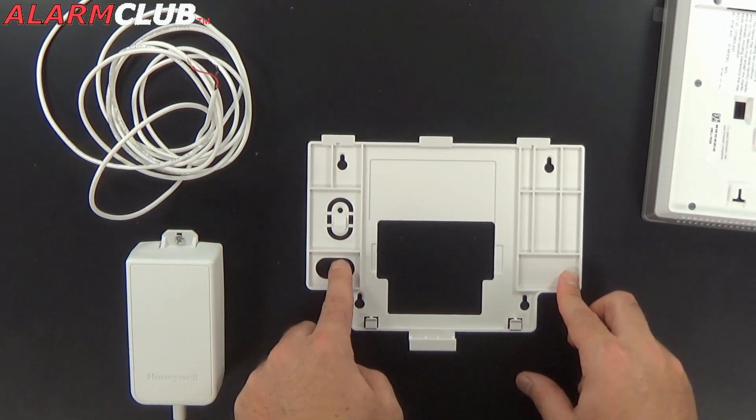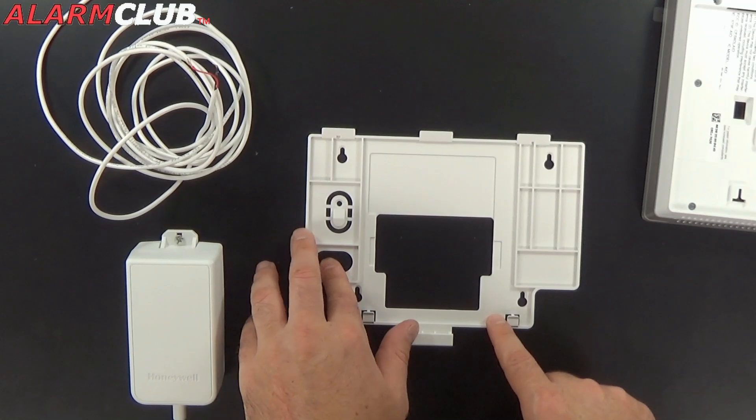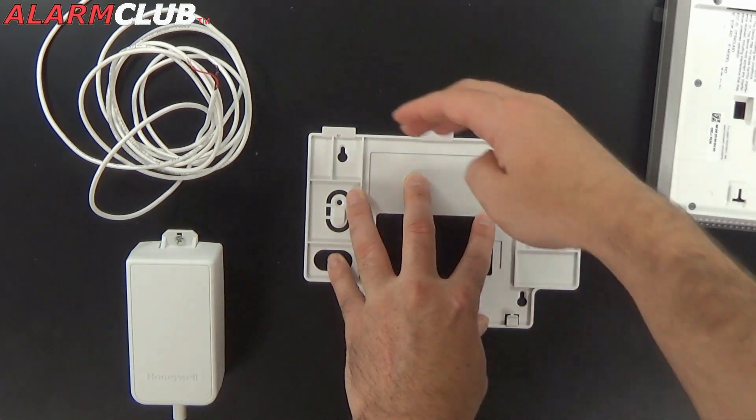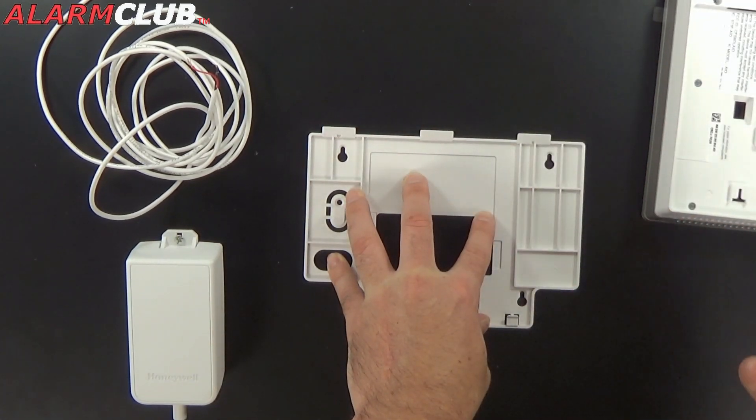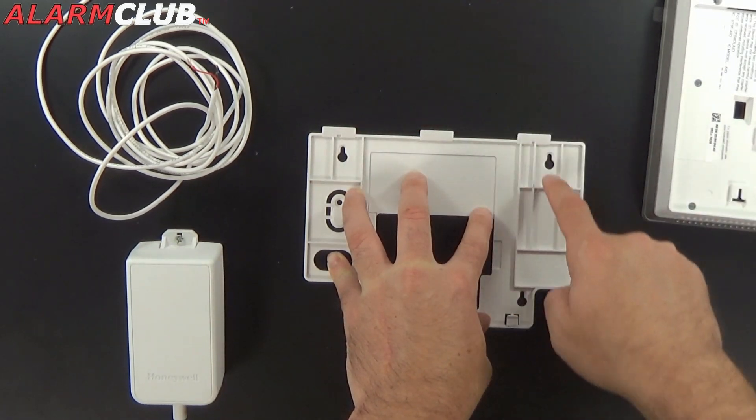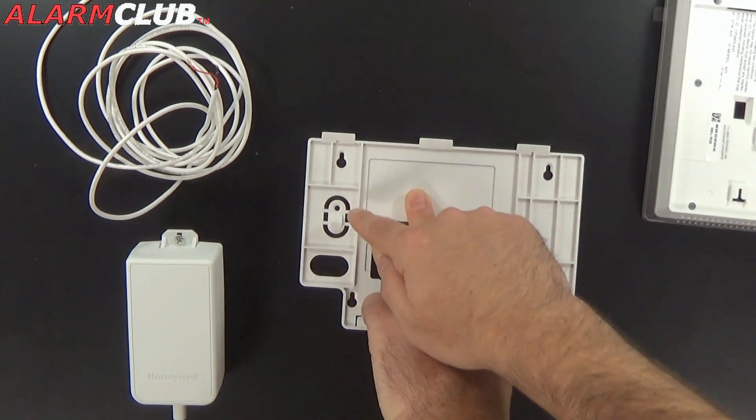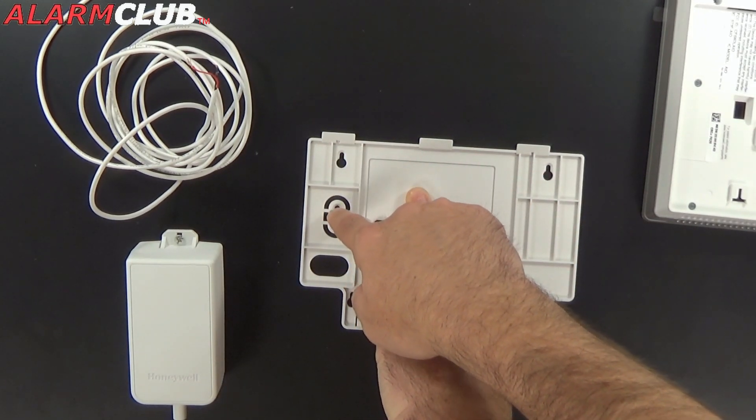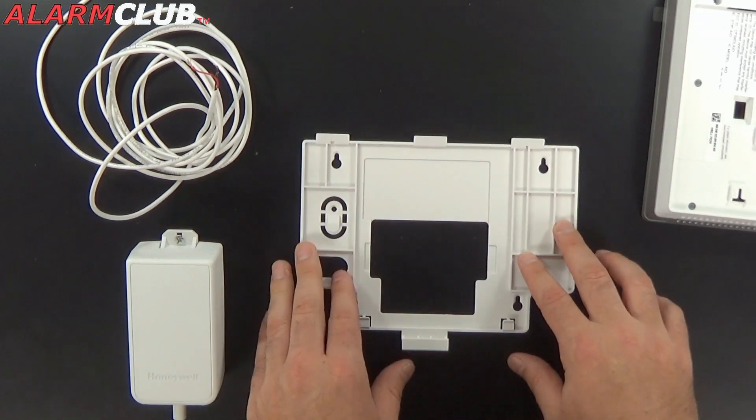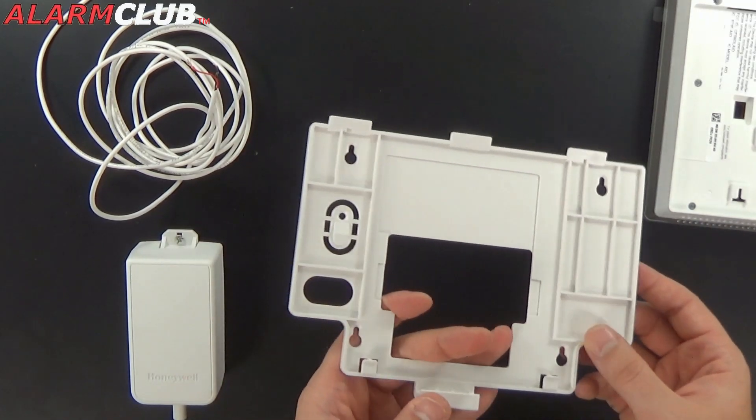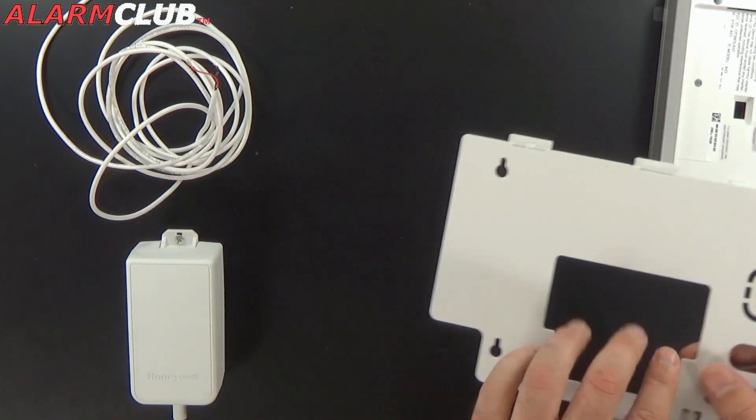So once you have your hole drilled and you have your wires running through, then you want to go ahead and just make sure this is leveled. If you have a level or app on your smartphone or an actual level, just make sure it's level. And then you can go ahead and mount your four screws here. And optionally, you can go ahead and use the tamper screw.